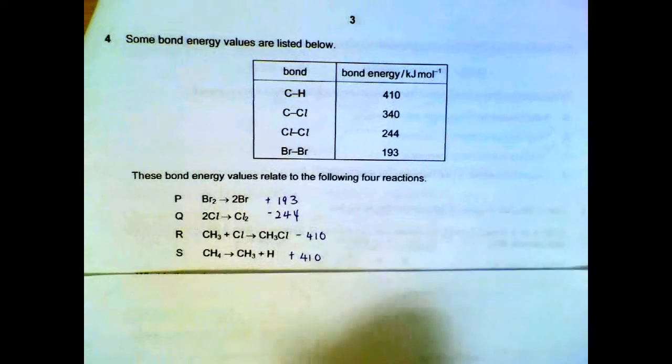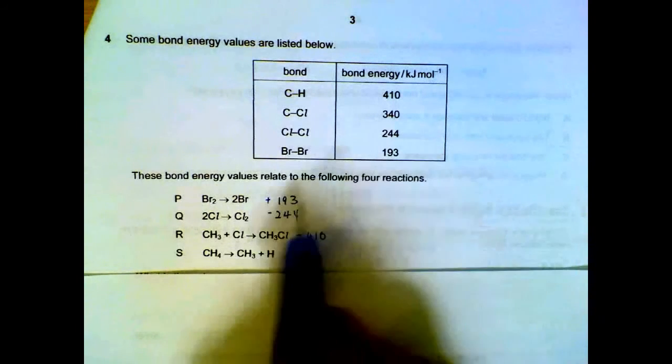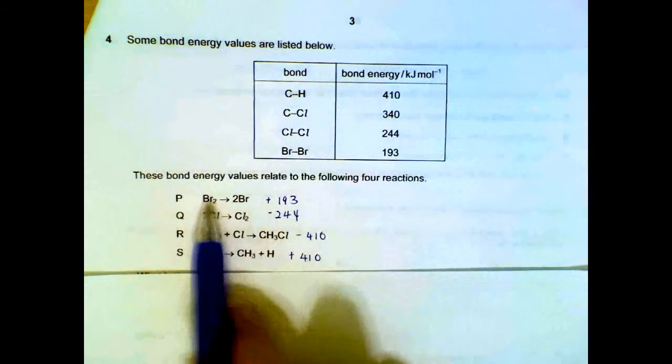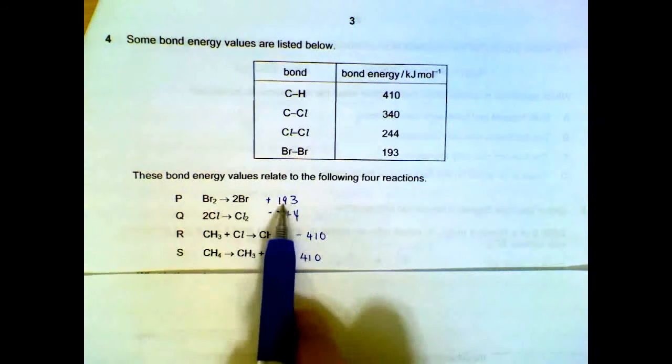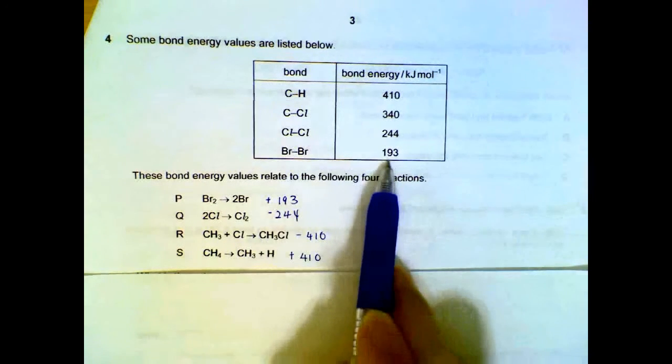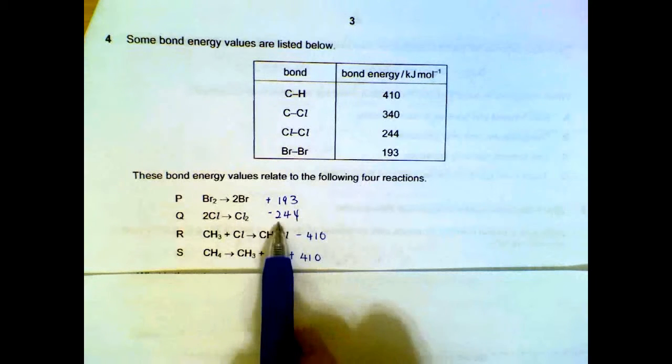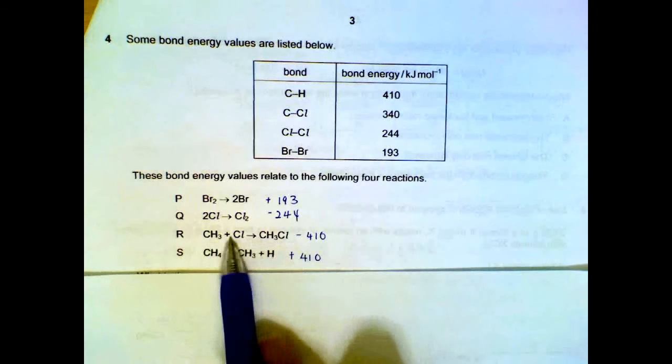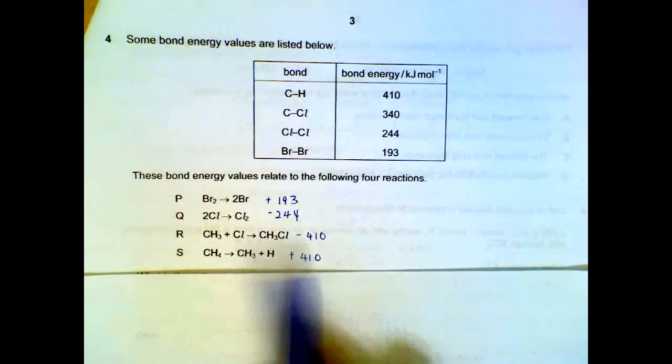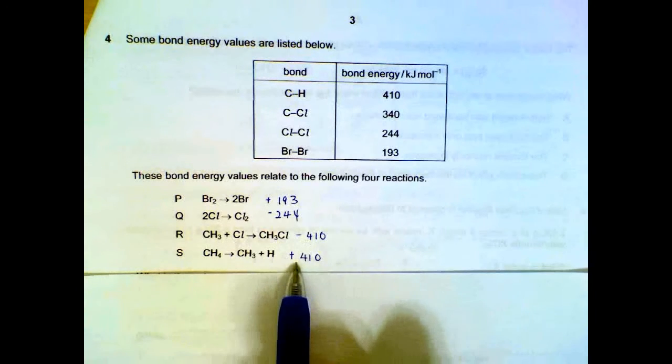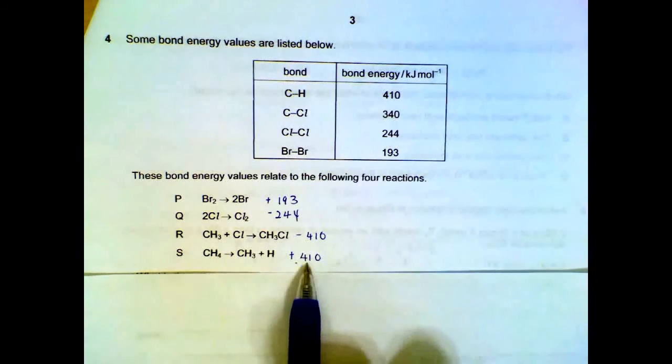Number four. You have to calculate the changes in energy. For P is bond breaking, so it will be plus 193, breaking off the Br bond. Q will be bond forming, so it will be exothermic, forming of chlorine. R, bond breaking, sorry, bond forming, so exothermic. S is a CH bond also, but it's bond breaking, so it's endothermic.